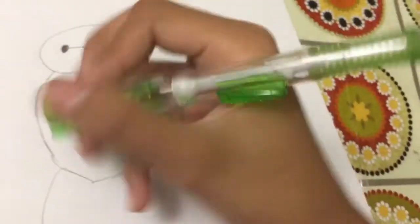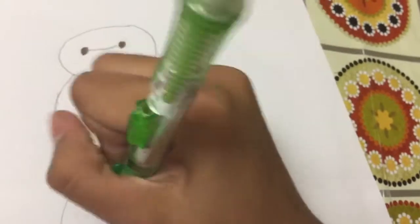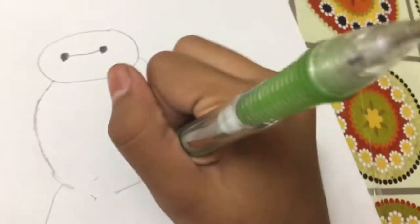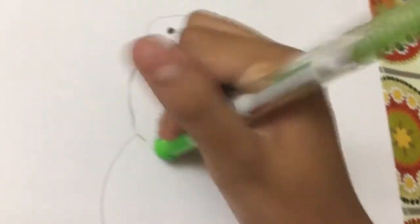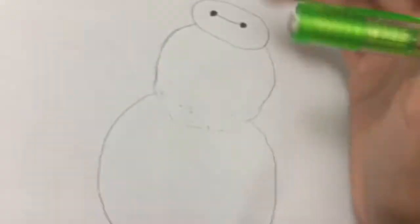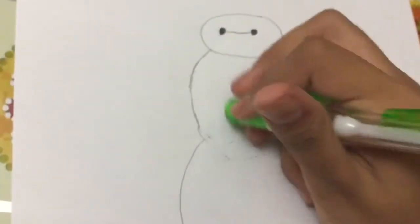Okay, so now we have this snowman. Now we're just going to erase this part in the middle like this. And there you go, that's Baymax's body.